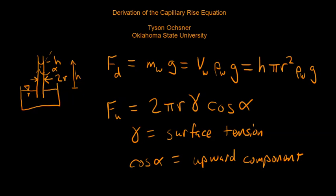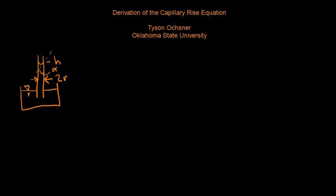Now we have an expression for the upward force and for the downward force, so we're going to equate those together. We're going to write that the upward force is equal to the downward force and we'll just plug in those expressions. For the upward force we had two pi r gamma, that's the surface tension which is a force per unit length, acting on this circumference two pi r, multiplied by cosine of alpha to get the upward component. That is equal to the downward force when these are at equilibrium: h pi r squared rho_w g.